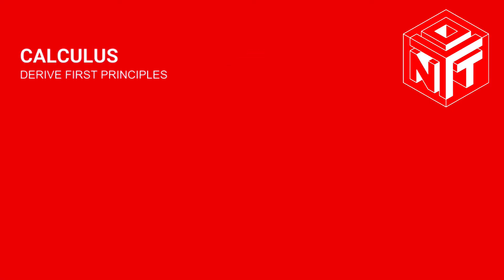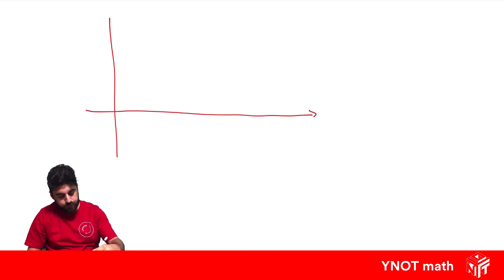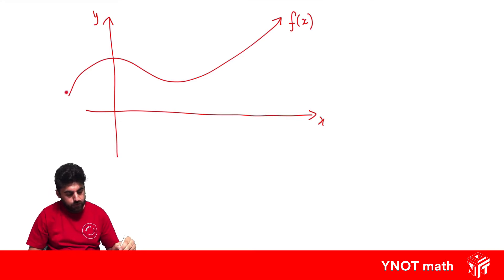Deriving first principles. Let's have a look at a generic function. Let's call it f of x. Now, as we move along the x-axis, what's happening to the function? Well, it's constantly changing.